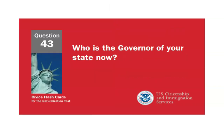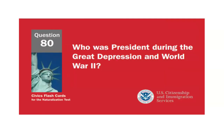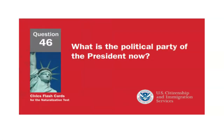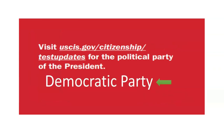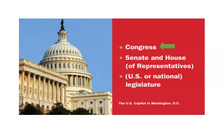Who is the governor of your state now? Answer will vary depending on the state that you live in. Please look at the description part of this video for a link to the answer. Who was the president during the Great Depression and World War II? Franklin Roosevelt. What is the political party of the president now? Democratic Party. Who makes federal laws? Congress.